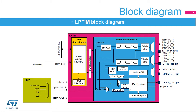The low-power timer features an encoder mode function that can be used to interface with incremental quadrature encoder sensors using the peripheral's LP-TIM-IN1 MUX and LP-TIM-IN2 MUX inputs. Both inputs feature glitch-filtering circuitry.